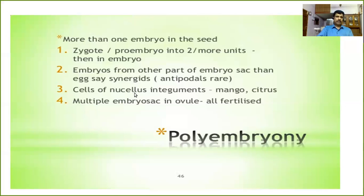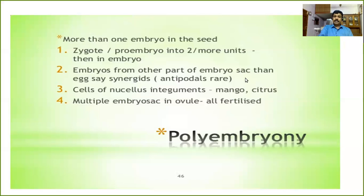As a result, more embryos occur. The fourth case is that multiple embryo sacs may develop in an ovule — multiple female gametophytes may develop, each with an embryo. All these cases lead to the formation of more than one embryo in a seed. One of the most important types of apomixis is adventive polyembryony, as seen in citrus and mango. As a result, polyembryony may occur.